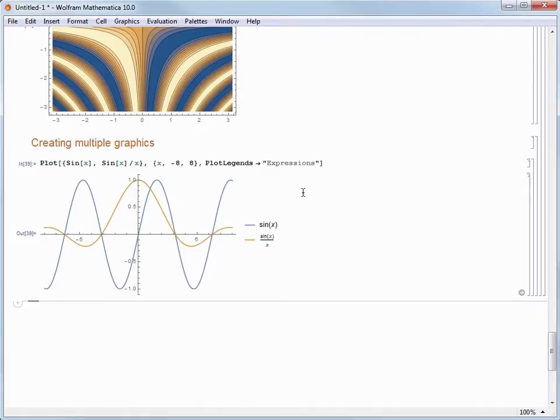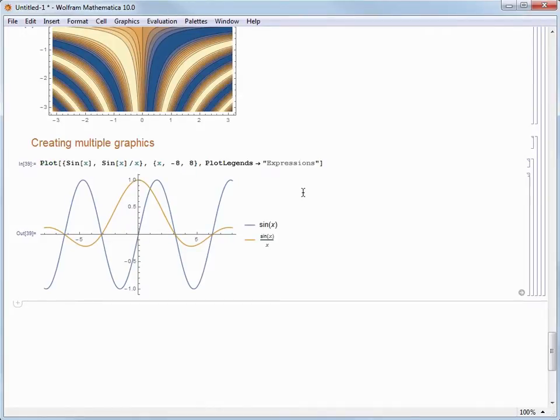Now, when we pick this and evaluate, we'll see that our plot has a nice legend, and it automatically labels the legend using the expressions that we are plotting. It's pretty slick, and it's very easy to do. Now, let's look at another way of adding options, which is by using the Suggestions bar, which I've had turned off for this video so far.